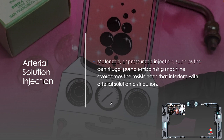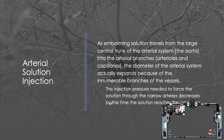Motorized or pressurized injections such as the centrifugal pump embalming machine overcome the resistances that interfere with arterial solution distribution. As embalming solution travels from the large central trunk of the arterial system — the aorta — into the arterial branches, the arterioles and capillaries, the diameter of the arterial system actually expands because of the innumerable branches of the vessels. The injection pressure needed to force the solution through the narrow arteries decreases by the time the solution reaches the capillaries.